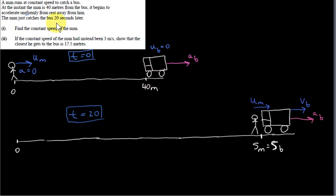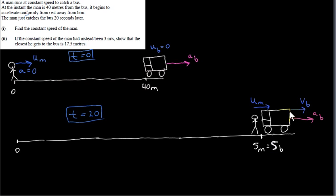The man just catches the bus 20 seconds later. At T = 20, the man has just reached the bus, so the distance S_M of the man from the starting point equals the distance S_B of the bus from the starting point. The speed of the man is still U_M because he moves at constant speed, and the acceleration of the bus A_B is unchanged. The bus speed has increased from U_B = 0 to some value V_B, which we don't yet know.